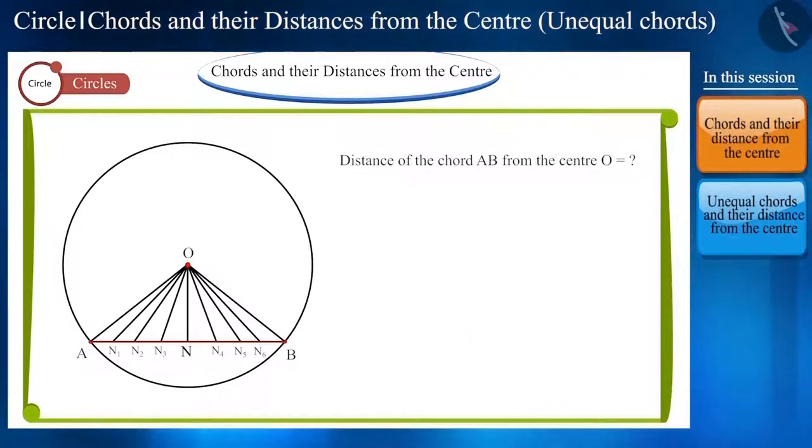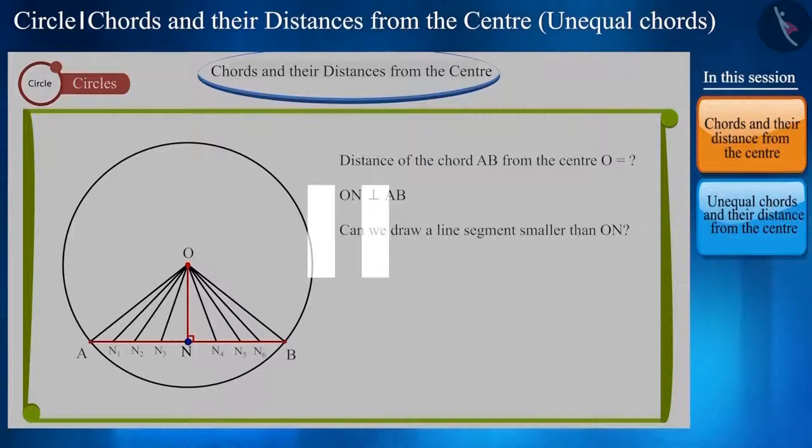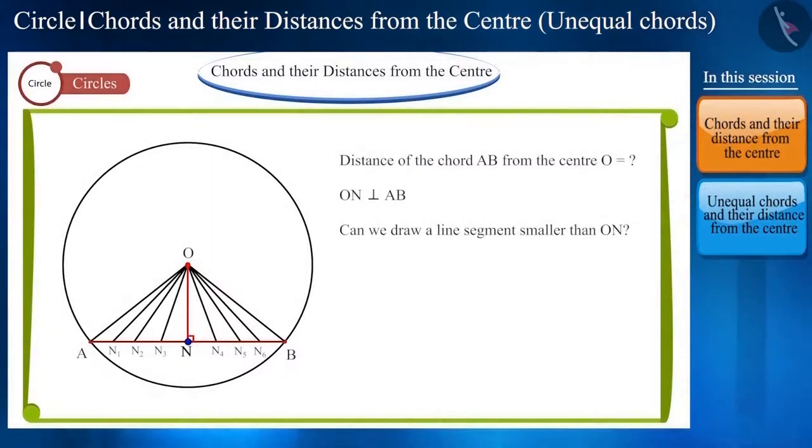Friends, we can see that of all these line segments, perpendicular ON drawn from the center O to chord AB intersecting AB at point N has the shortest length. Can we draw a smaller line segment than ON? You can pause the video and try. You will see that we cannot draw a line segment smaller than perpendicular ON here.